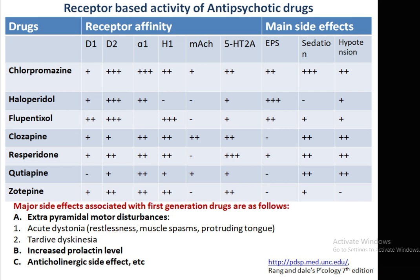Haloperidol, a high potency first generation drug, also primarily targets D2 receptors — all first generation drugs mainly target D2. Haloperidol also targets alpha-1 receptors, producing EPS side effects, with less sedation and some hypotension. Second generation drugs like clozapine have lesser EPS side effects because they have multiple target activity spread across receptors. They act on D1 and D2 receptors but are predominantly active at alpha-1, H1, muscarinic, and 5-HT2 receptors, resulting in lesser EPS but producing sedation and hypotension.